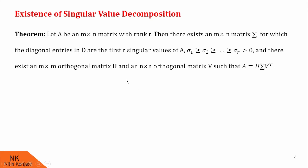Next, we will see the existence of singular value decomposition for any matrix A. There is a theorem which states that if A is any M cross N matrix with rank R, then there exists an M cross N matrix sigma for which the diagonal entries in D are the first R singular values of A, given by sigma 1 ≥ sigma 2 ≥ ... ≥ sigma R, all greater than 0. And there exist an M cross M orthogonal matrix U and an N cross N orthogonal matrix V such that A equals U into sigma into V transpose. We are not going to see the proof of this theorem, but we are going to use it to find the SVD of a given matrix A.